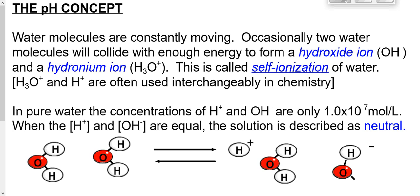Water molecules are always moving around — they bounce around and roll past each other, and sometimes two water molecules hit each other with enough force that one of the bonds between oxygen and hydrogen breaks off. What you have then is a hydrogen +1 ion floating around freely and a hydroxide ion floating around freely. That hydrogen +1 ion can sit on the negative end of another water molecule — we call that hydronium. This happens in water quite naturally; we call this the self-ionization of water.